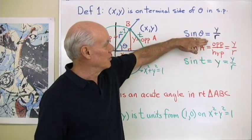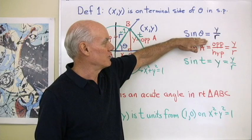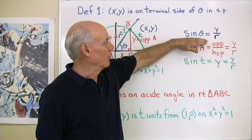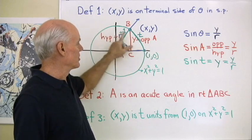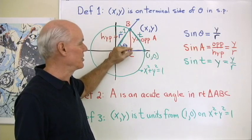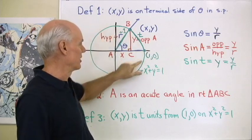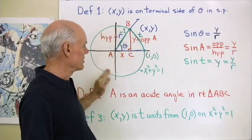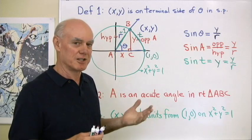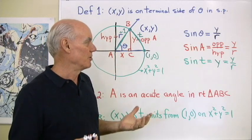This is a kind of a general definition that allows you to find sine, cosine, and tangent for any angle whatsoever in standard position. And we're kind of intuitively more familiar with angles in standard position than we are for arc lengths like this. So this gives us the ability to find sine, cosine, and tangent for any angle whatsoever, positive, negative, no matter how many degrees are in it.